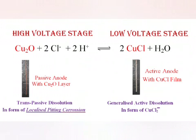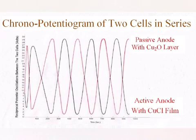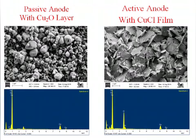It is observed that the periodic formation and the dissolution of cuprous oxide on surface of the anodes of these cells is responsible for such reciprocal potential oscillations between the coupled cells. The cell having its anodic surface coated with passivating cuprous oxide layer attains the passive, high voltage state, while the cell with porous layer of cuprous chloride on anode is in low voltage active state. The presence of cuprous oxide on passivated anodic surface has been confirmed by scanning electron micrographs and energy dispersive X-ray spectra.